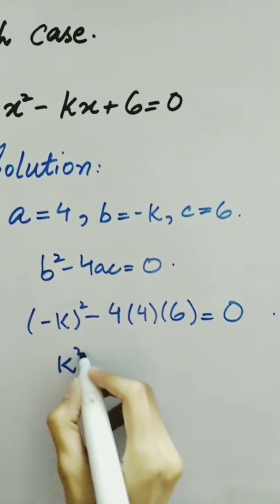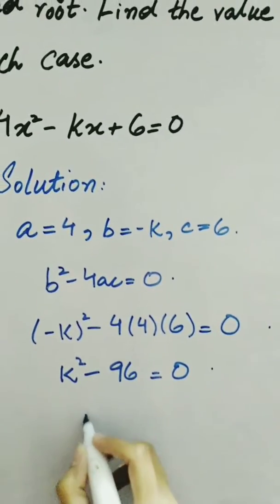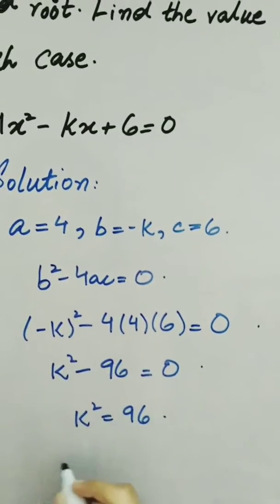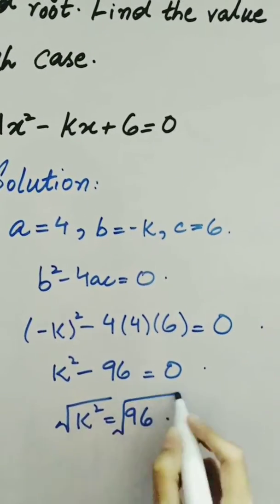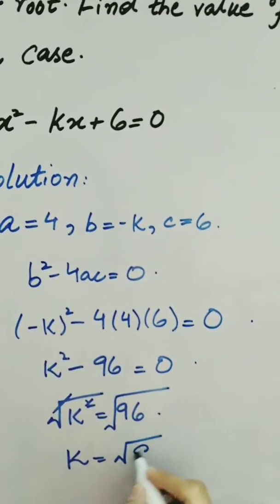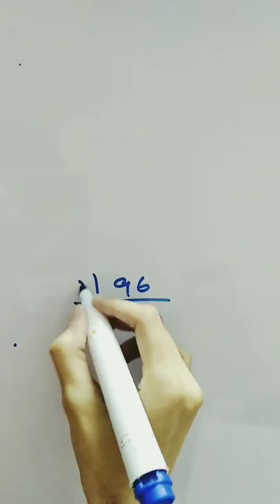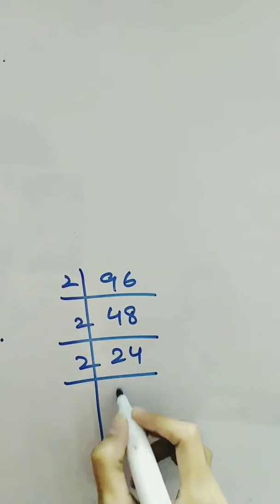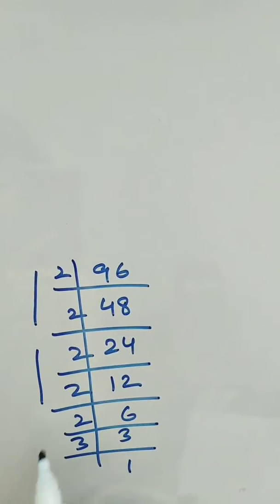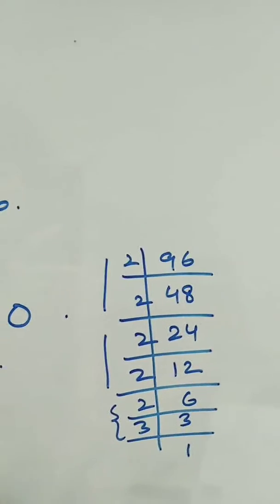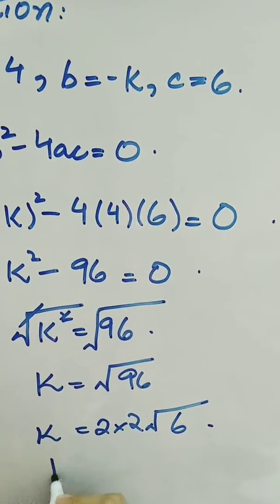The negatives cancel and it becomes k squared minus 96 equals 0, or k squared equals 96. To find the value of k, we take the square root of both sides. Then k equals root 96, and factorizing 96 we get k equals 4 root 6.